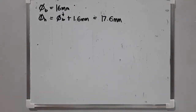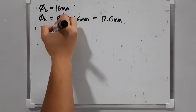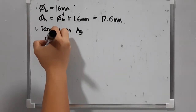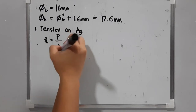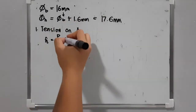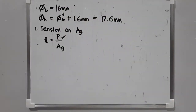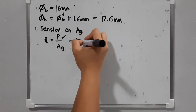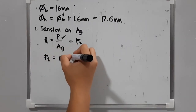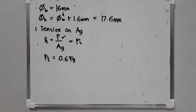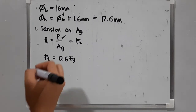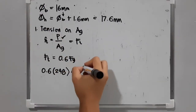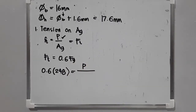The first limit state is tension on gross area. The actual tensile stress equals the tensile force over the gross section area. Since we are looking for load P, we equate actual stress to allowable stress, where allowable stress is 0.6 of Fy. Therefore, 0.6 times 248 equals P over the gross area of 200 by 10.